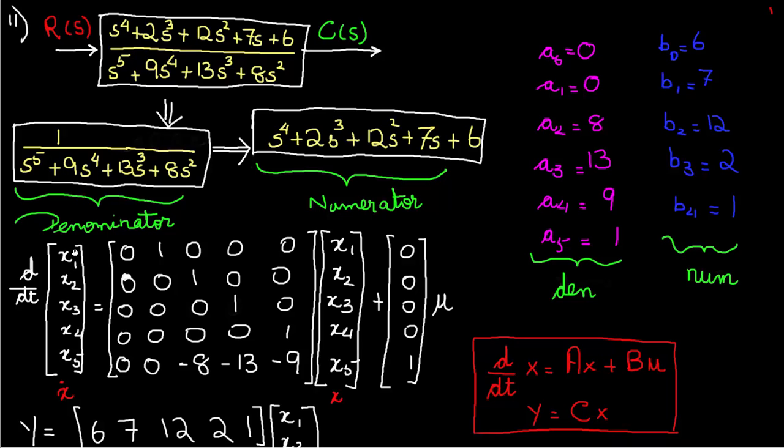So it's a fifth order problem. So you're going to have X1, X2, X3, X4, X5. And we know this is going to be a 5 by 5 matrix for A. And this is your A right here. This matrix right here.